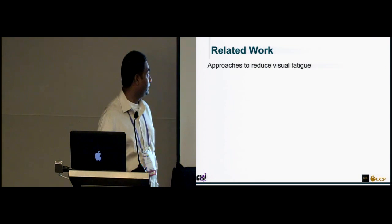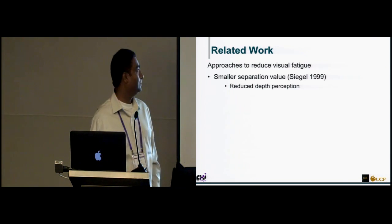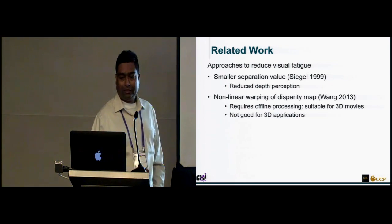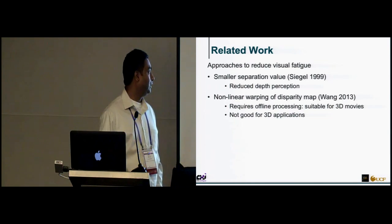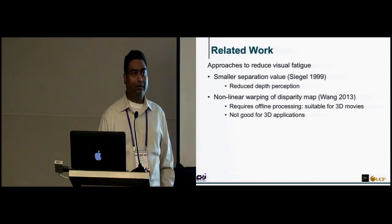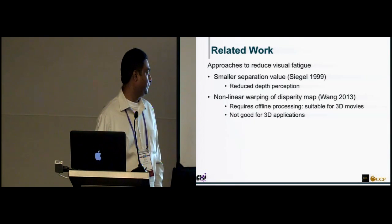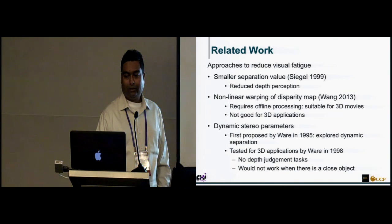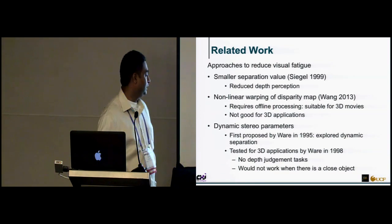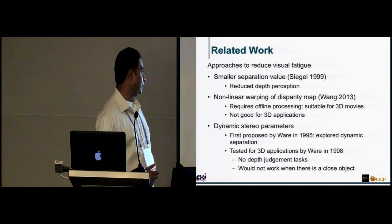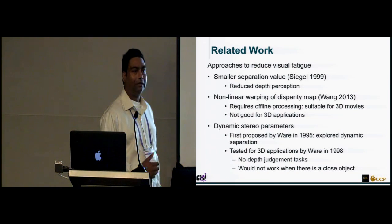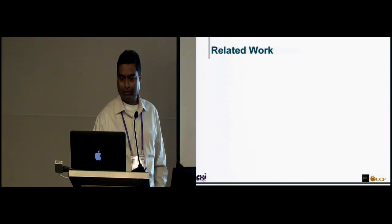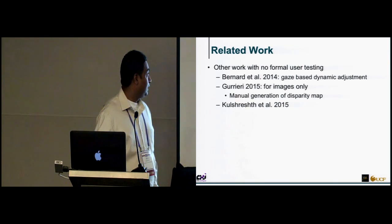There have been several approaches to reduce visual fatigue in the past. One is to use a smaller separation value, but it reduces depth perception. Another uses a non-linear warping function on the disparity map, but this requires offline processing and is only suitable for 3D movies. Dynamic stereo parameters were first explored by Ware in 1995, exploring only separation, with user testing in 1998 that included no depth judgment task and didn't work for objects much closer to the camera.